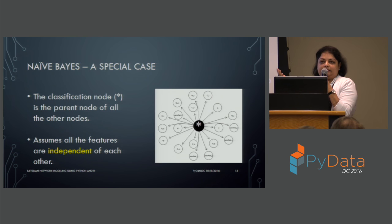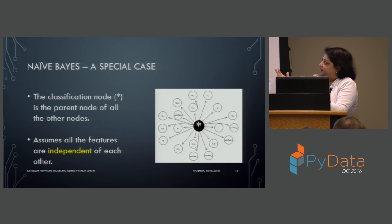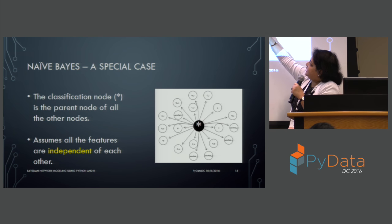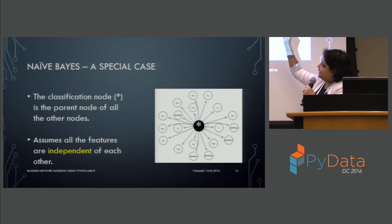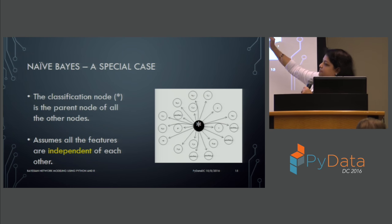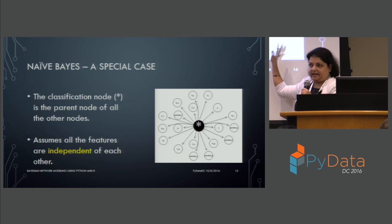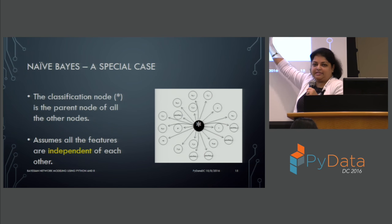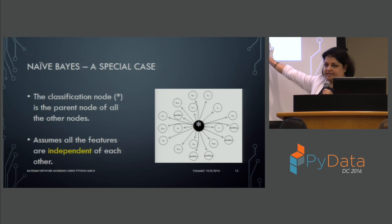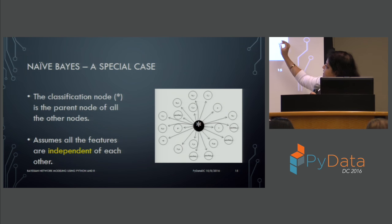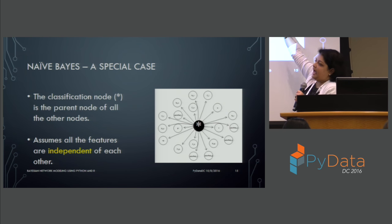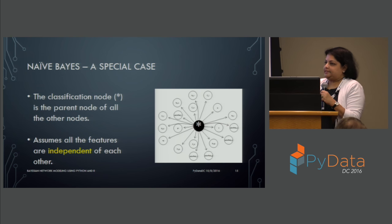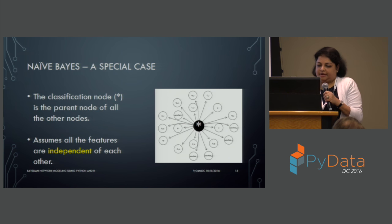Naive Bayes is another commonly used term — it's a special case of the Bayesian network where the element you're trying to predict is the parent node, and it depends on all other features, but there is no interrelationship between those other attributes. This is the most simple form of a Bayesian network. In full Bayesian networks, attributes can in turn have relationships with each other, which increases the complexity and the kinds of problems they can handle.